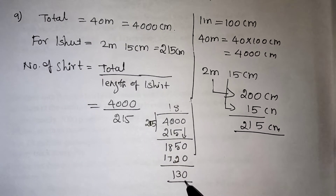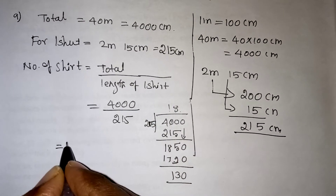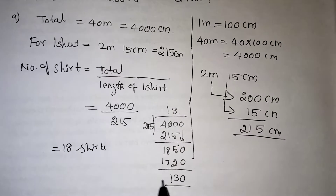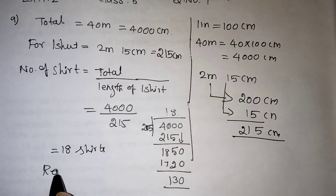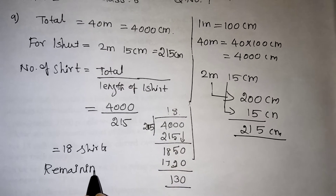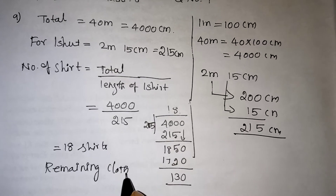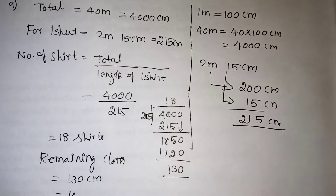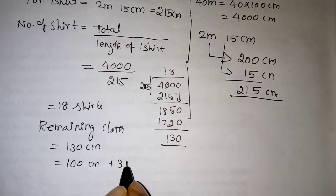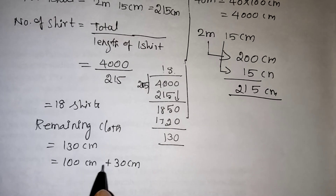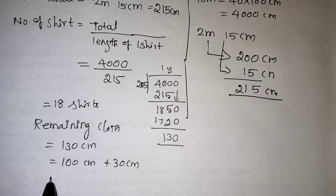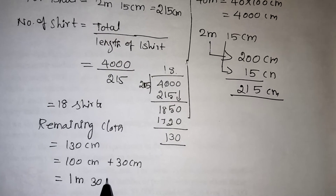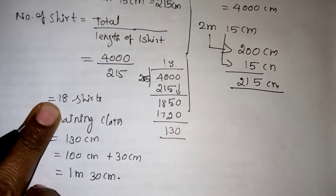So the quotient is 18, meaning we can stitch 18 shirts in total. The remaining cloth will be 130 centimetres. We can split 130 centimetres into 100 centimetres plus 30 centimetres. Since 100 centimetres equals 1 metre, the remaining cloth is 1 metre 30 centimetres. That is the correct answer.